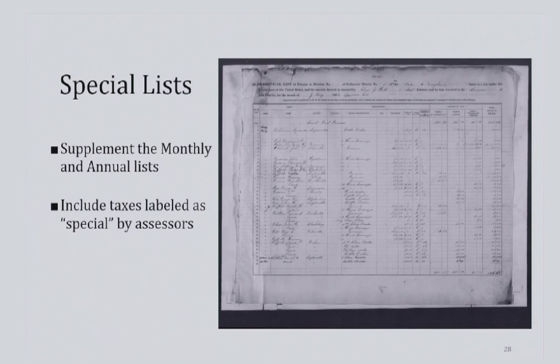The so-called special lists were used to supplement the incomplete annual and monthly lists and included taxes that the assessors deemed special — for example, the special income tax of October 1864. If you are unable to find the individual you are looking for in the regular monthly or annual list, don't forget to look for and check the special lists, often found attached at the end of the monthly list.